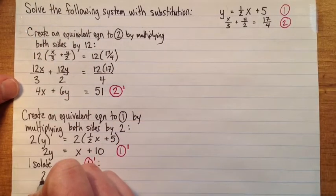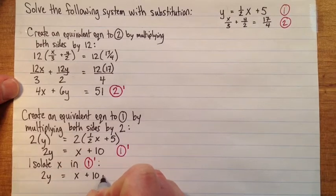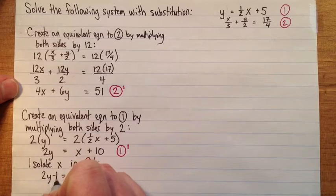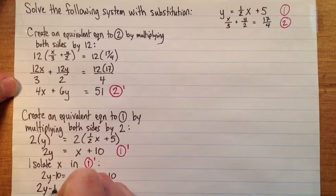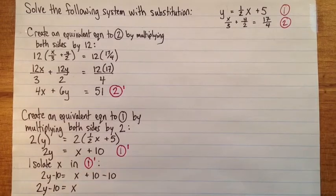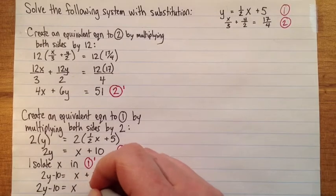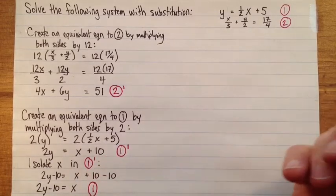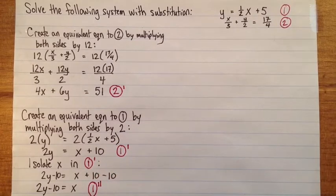And I'm going to do that by subtracting 10 from both sides. So I get x equals 2y minus 10. And then this equation is going to be important again. But it's still really number 1. You can call it equation 3 or equation 4 or whatever. But I'm going to call it 1 double prime.